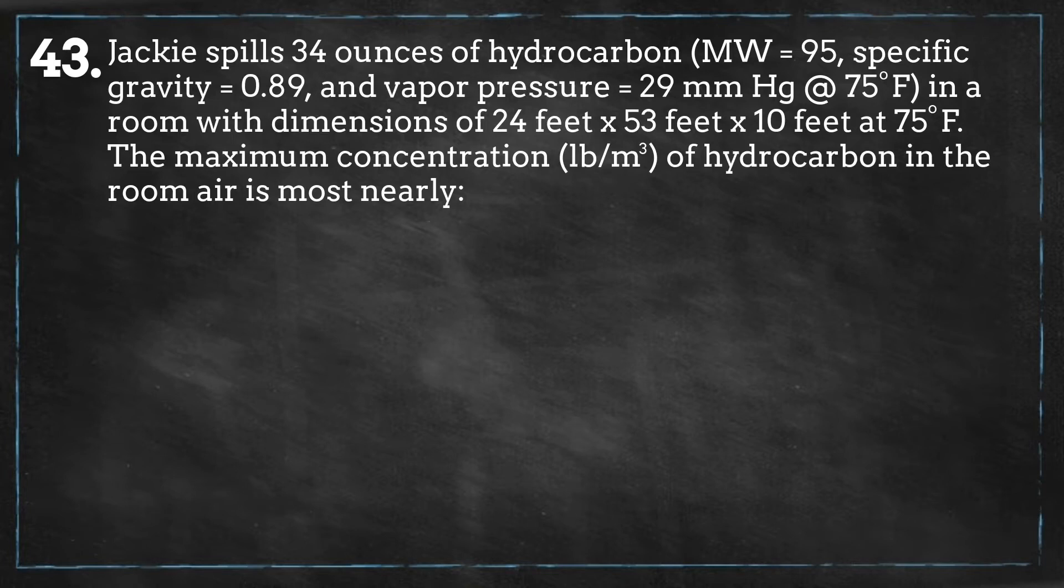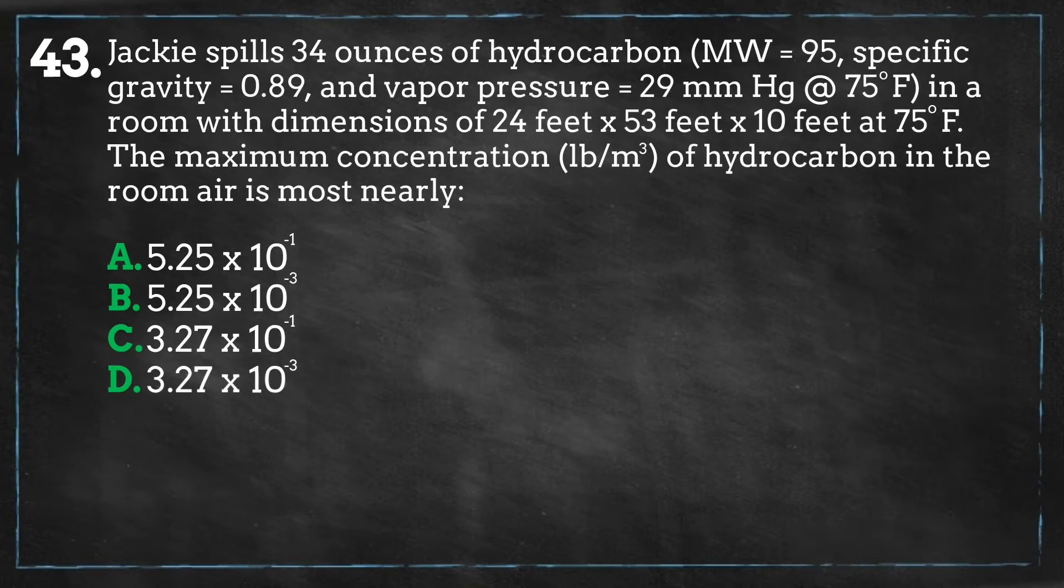The maximum concentration of hydrocarbon in the room air is most nearly: A, 5.25 times 10 to the minus 1 power; B, 5.25 times 10 to the minus 3 power; C, 3.27 times 10 to the minus 1 power; or D, 3.27 times 10 to the minus 3 power.